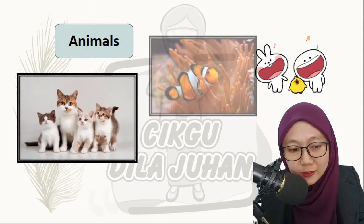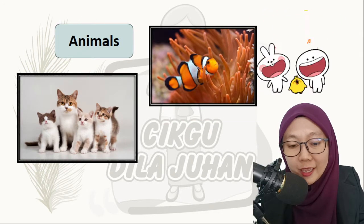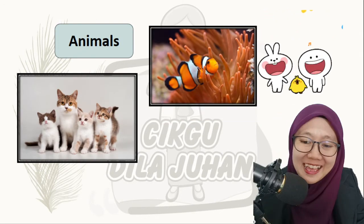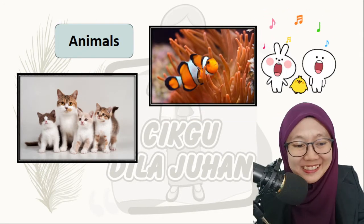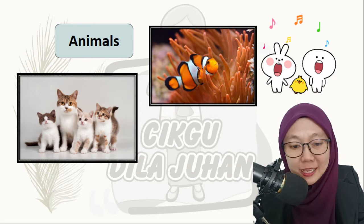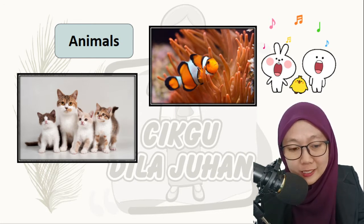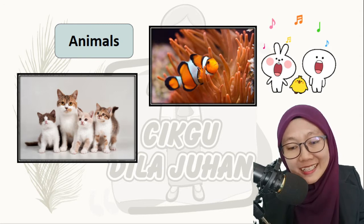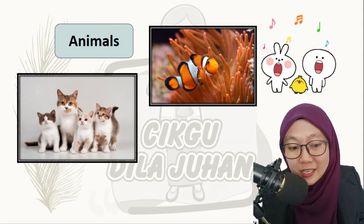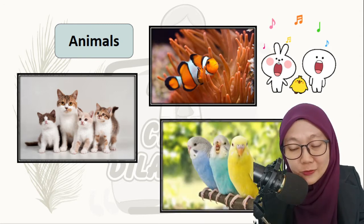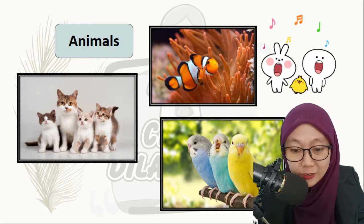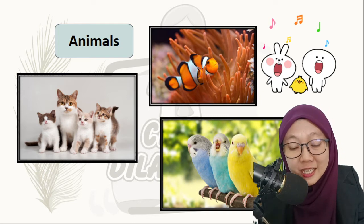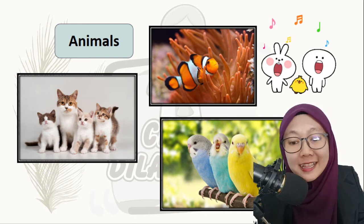We have animals. There are a lot of animals around us. For example, we have cat, we have clownfish, we have a lot of other types of fish, we have birds. So all of that are living things.